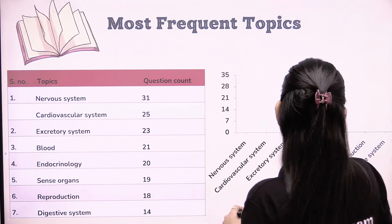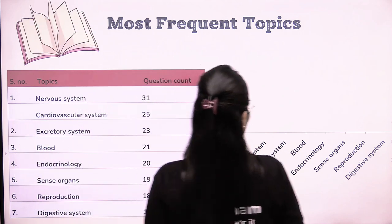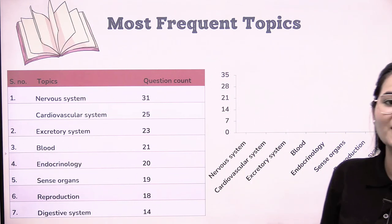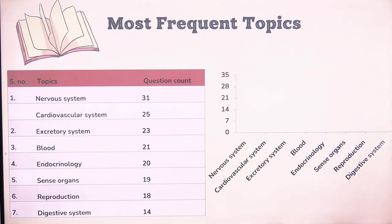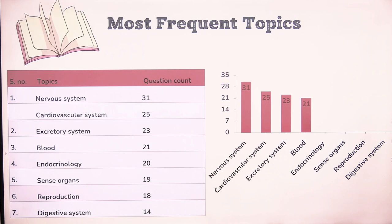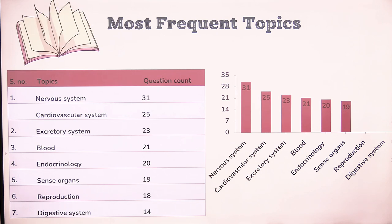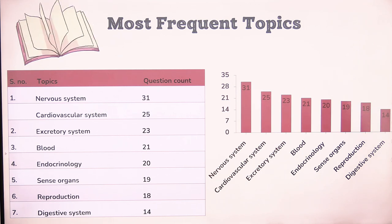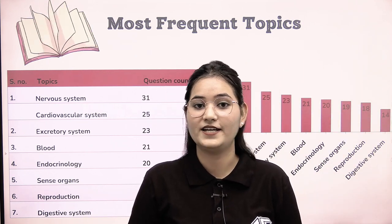There are eight most frequent topics. The Nervous System has the most questions at 31. Cardiovascular System has 25 questions. Excretory System has 23 questions. Blood has 21 questions. Endocrinology has 20 questions. Sense Organs have 19 questions. Reproduction has 18 questions. And the Digestive System has 14 questions. These 8 topics together make up the most frequent category.